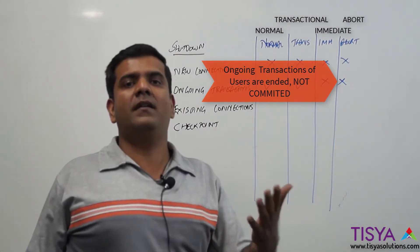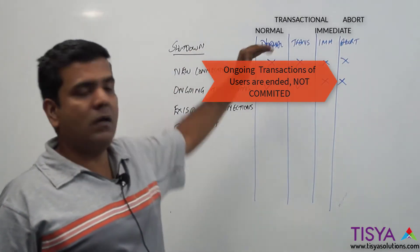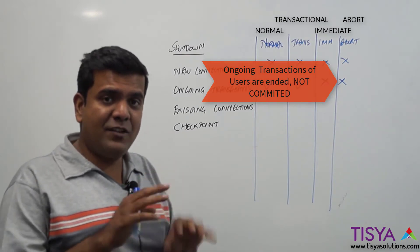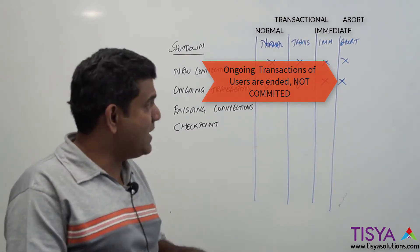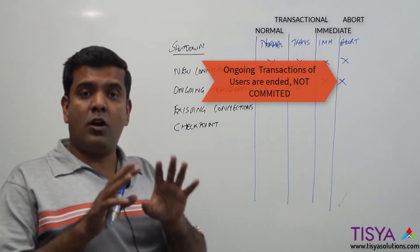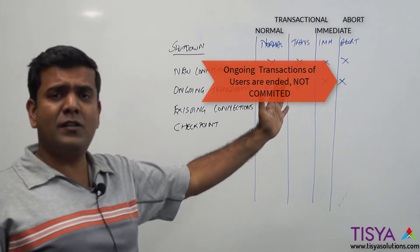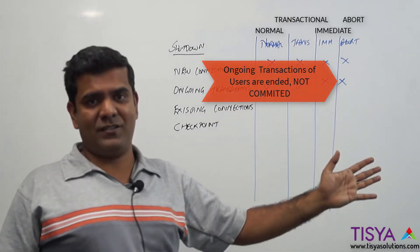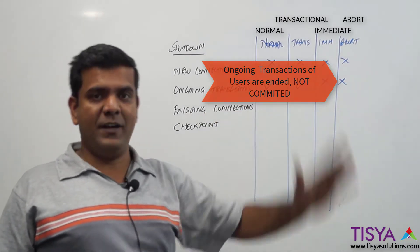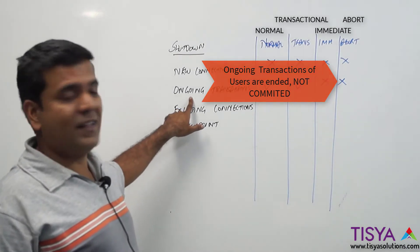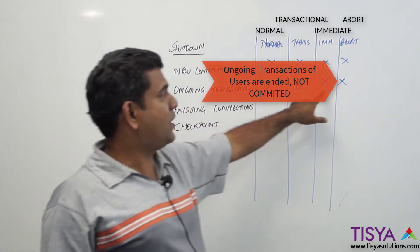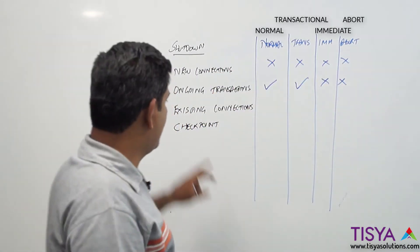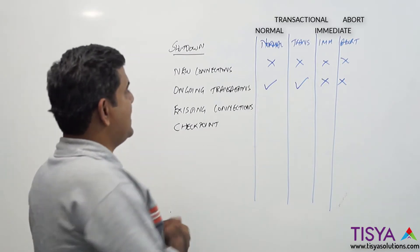There is no purpose in issuing a commit after a shutdown immediate or shutdown abort has been issued. The moment somebody issues a shutdown immediate or a shutdown abort, users who have not yet committed cannot commit their transaction — they will have to redo it. That is the ongoing transaction status for immediate or abort: not allowed.